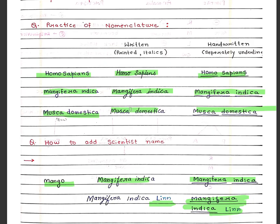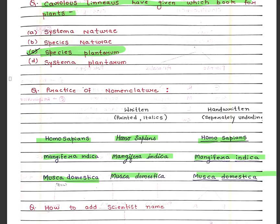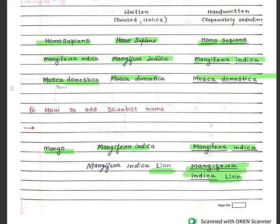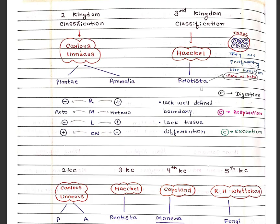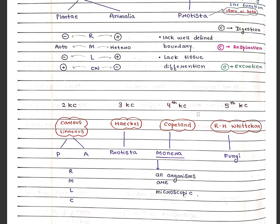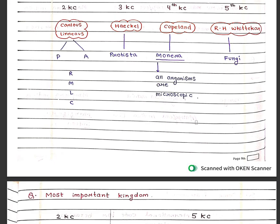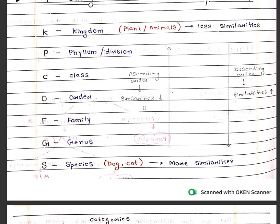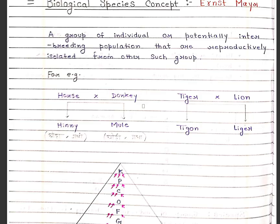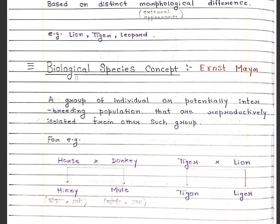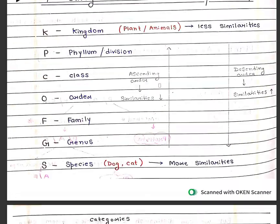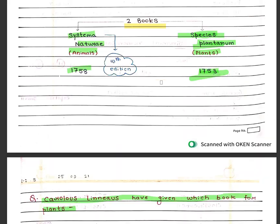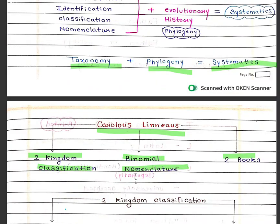So let's end this lecture here. In the next lecture, we will study about the 3-kingdom, 4-kingdom and 5-kingdom classifications, 7 categories of taxonomy studies, and the biological species concept. Stay tuned and subscribe to our channel. Thank you.